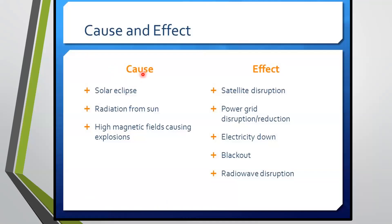Now what are the causes? Solar eclipse — radiation from the sun, high magnetic fields causing explosions. Now the effects of the solar eclipse: satellite disruption, power grid disruption or reduction, electricity down, there will be a complete blackout, and radio wave disruption.